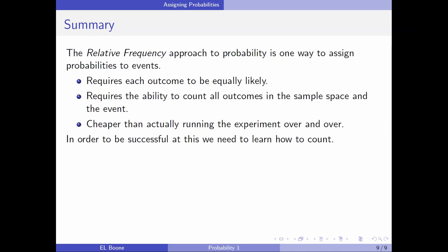So, relative frequency approach to probability is one way to assign probabilities to event. It requires each outcome to be equally likely and it requires the ability to count all the outcomes in the sample space and the event space. It's cheaper than actually running the experiments over and over. And in order to be successful, we need to learn how to count. And that's what some of the later videos are going to be about. It's really going to focus in on being able to count. The next couple of videos are going to be talking about properties of probabilities and things that we need to know to be able to really deal with probabilities in an effective manner. And I'll see you there.